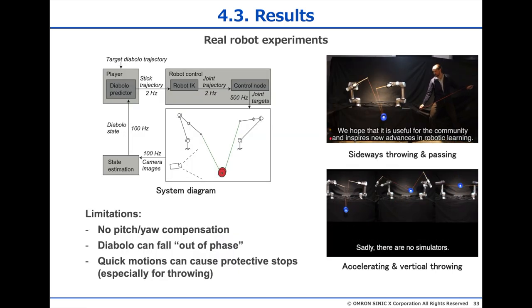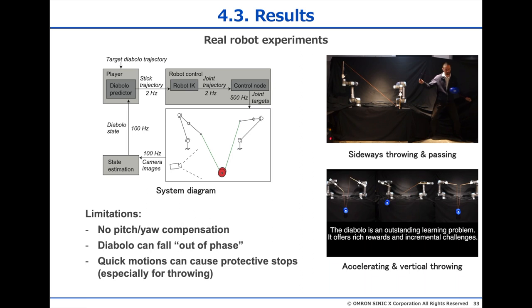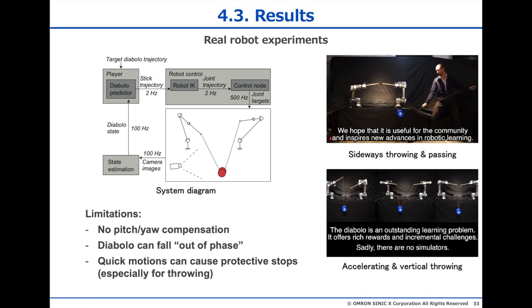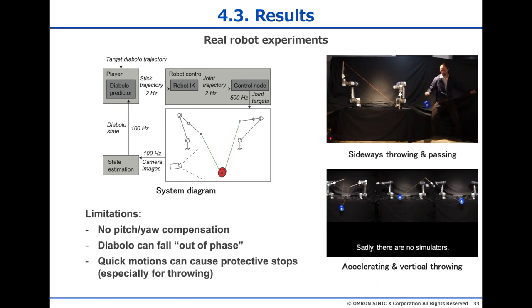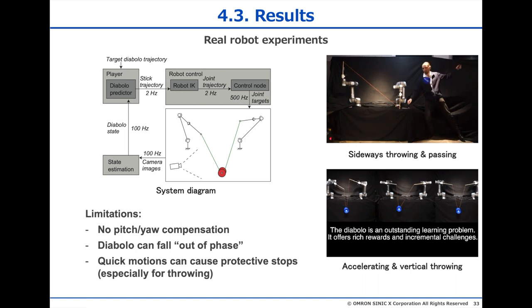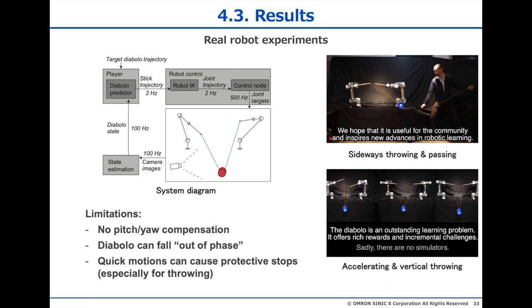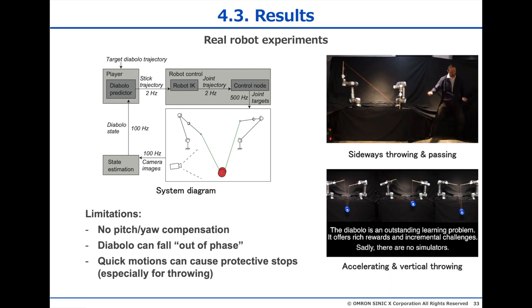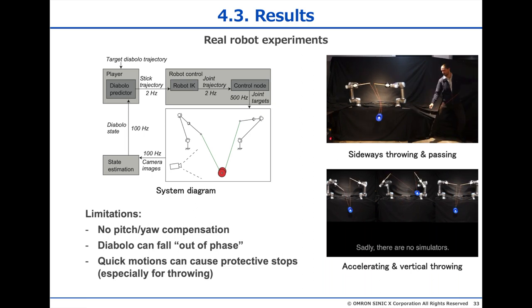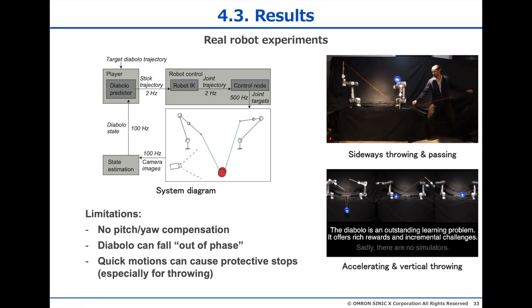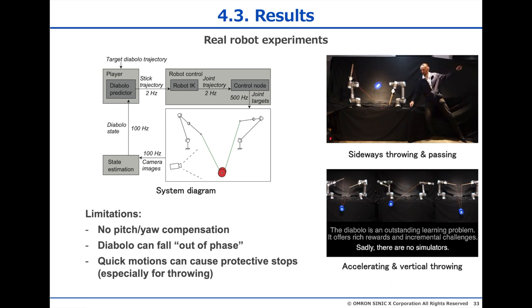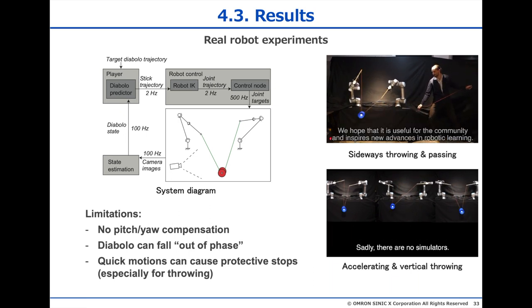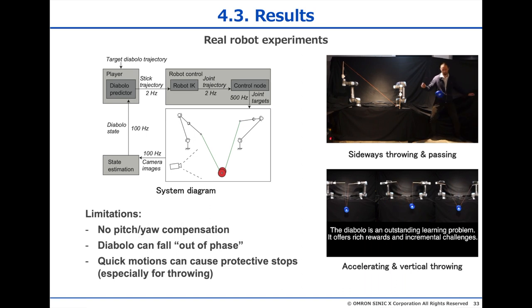We also set this up on two real robot arms using ROS and MoveIt, and tested acceleration and slowing motions. The system worked, but there were some problems. For one, we did not compensate for pitch and yaw, so we could not keep going indefinitely like in simulation. Second, we saw that the Diabolo can fall out of phase, so to speak, during this circular acceleration, the middle of the bottom video. This would be solved by adjusting the speed of the trajectories, and not only the positions, and this is part of future work.